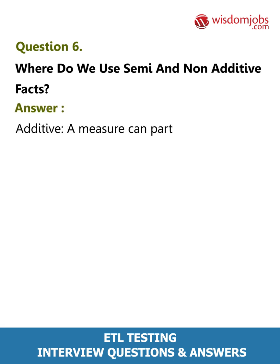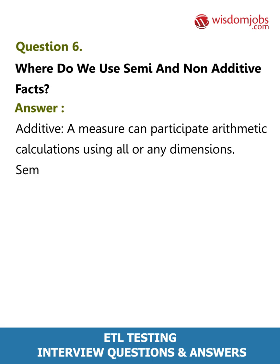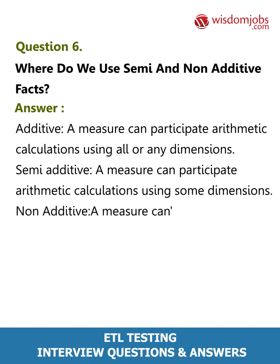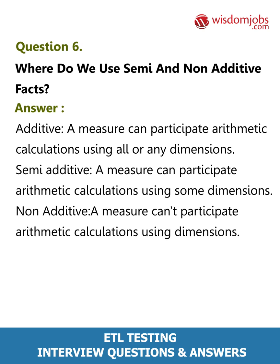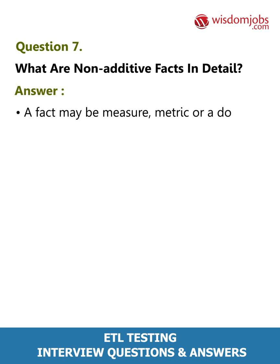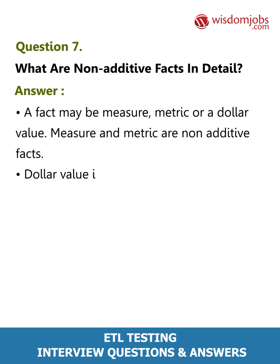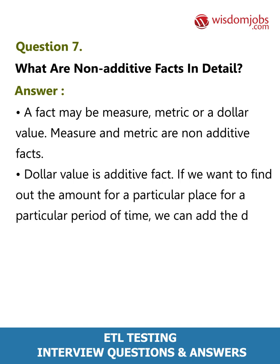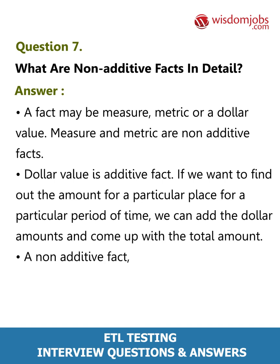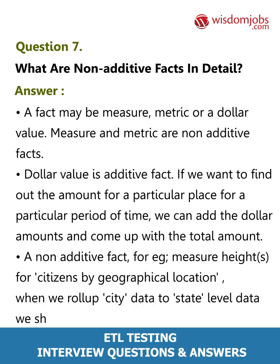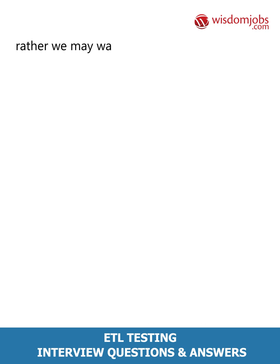Question 6: Where do we use semi and non-additive facts? Answer: Additive — a measure can participate in arithmetic calculations using all or any dimensions. Semi-additive — a measure can participate in arithmetic calculations using some dimensions. Non-additive — a measure cannot participate in arithmetic calculations using dimensions. Question 7: What are non-additive facts in detail? Answer: A fact may be a measure, metric, or a dollar value. Measures and metrics are non-additive facts; dollar value is an additive fact. For example, if we want to find the amount for a particular place over a particular period of time, we can add dollar amounts to get the total. A non-additive fact example: measuring heights of citizens by geographical location — when rolling up city data to state level, we should not add heights but may want to derive a count instead.